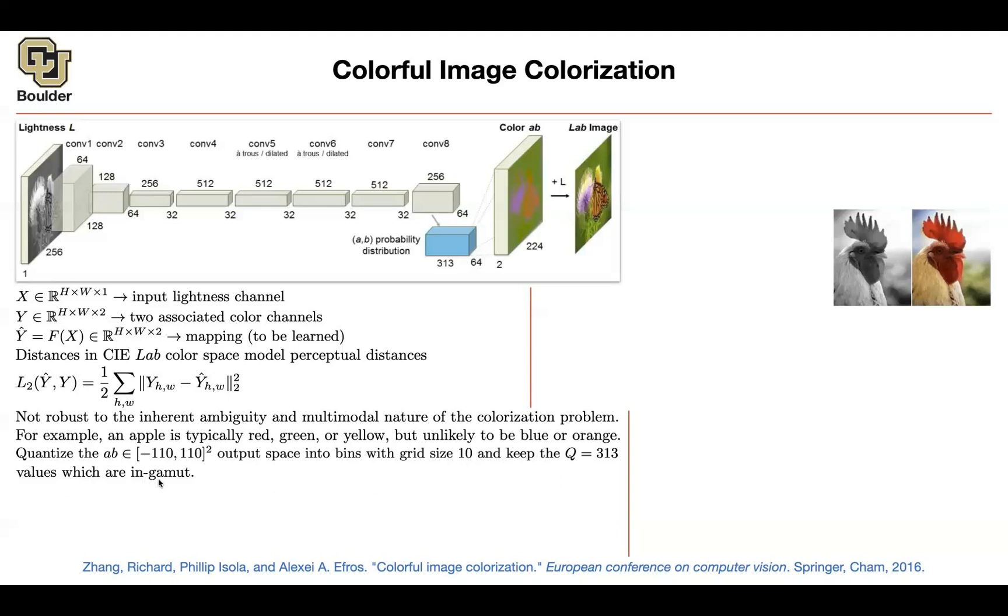A lot of those values are going to be not in gamut. It means that those colors are not going to happen in your reality. The likelihood of them happening is very low. And then you're going to be able to quantize this interval square to 313 values. Now you can write a Softmax outputting 313 values. So far, so good.